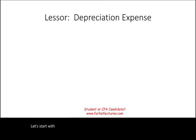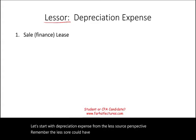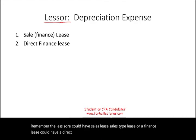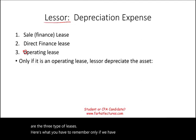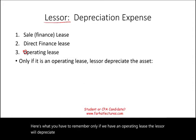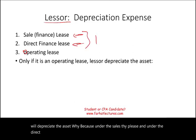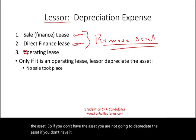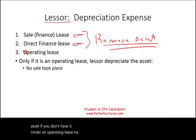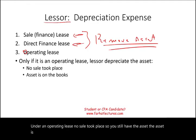Let's start with depreciation expense from the lessor's perspective. The lessor could have a sales-type lease, a direct finance lease, or an operating lease — those are the three types. Only if we have an operating lease will the lessor depreciate the asset. Why? Because under the sales-type lease and the direct finance lease, we remove the asset. The lessor de-recognizes the asset. So if you don't have the asset, you don't depreciate it. Under an operating lease, no sale took place, so you still have the asset on the books.